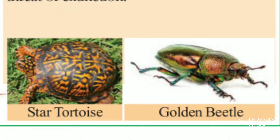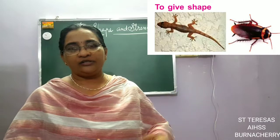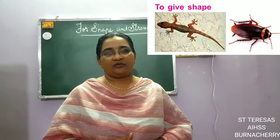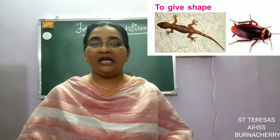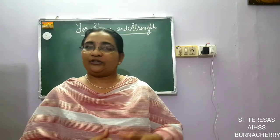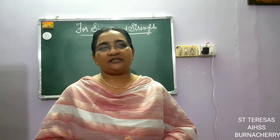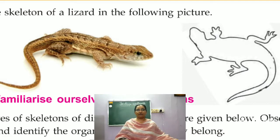Star tortoise and golden beetle are examples of animals getting extinct. Cockroach and lizard are two small creatures always found in our houses — but are their skeletons alike? The lizard does not have an exoskeleton, but the cockroach does. On page 126, an empty picture is given where you need to draw the skeleton of a lizard.